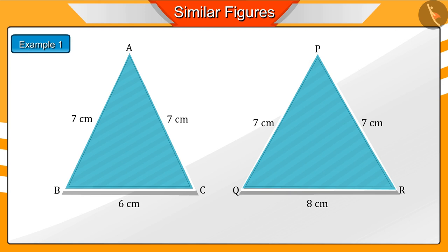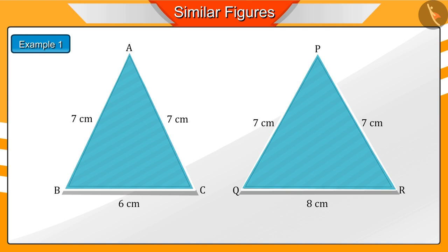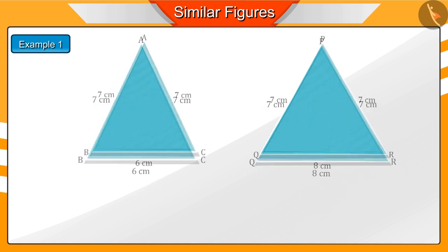Polygons are similar if their corresponding angles are equal and the ratio of their corresponding sides are same. Let's first see the ratio of the corresponding sides in these triangles.